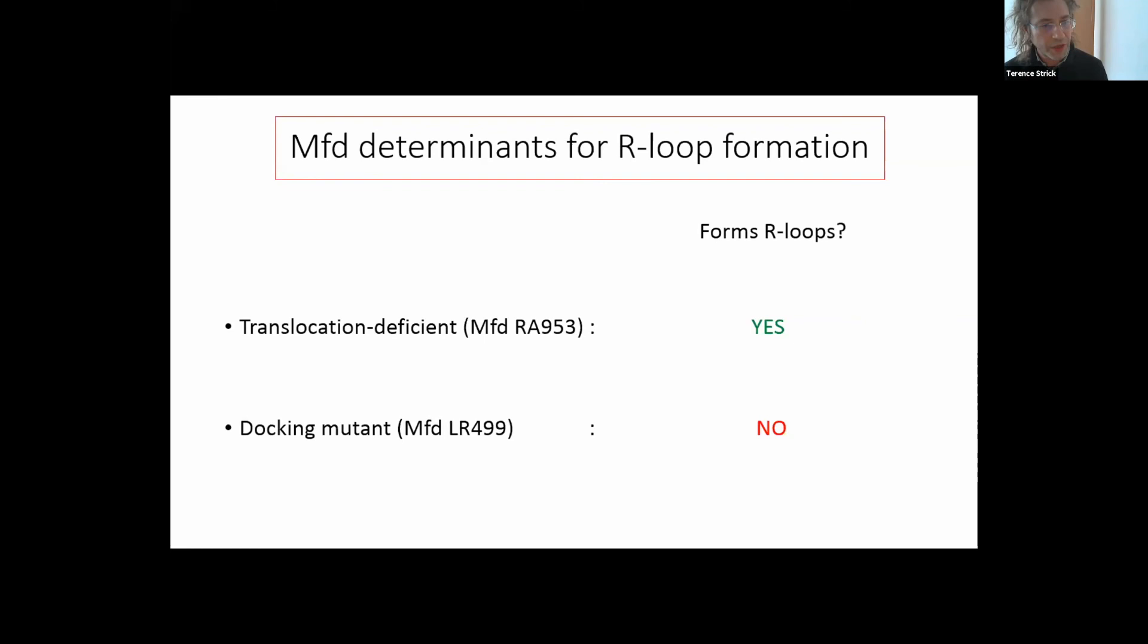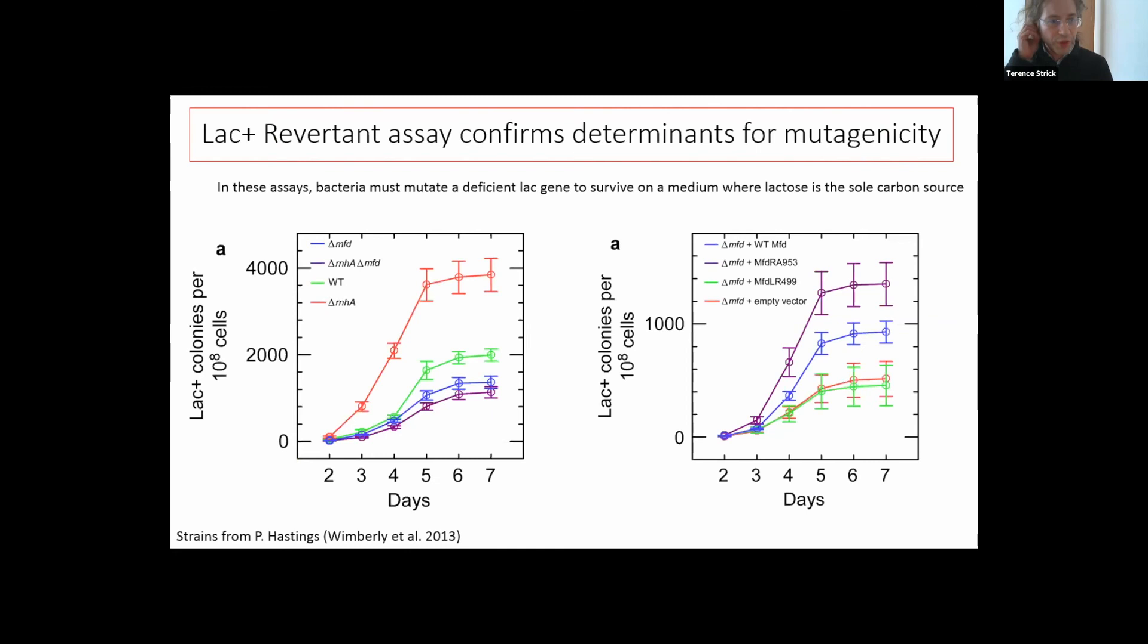Again, MFD does not need to translocate. In fact, we can change the rate at which this domain forms by playing with the relative velocity of MFD and RNAP by changing nucleotide concentration. However, docking to polymerase is essential. If you have a docking mutant, it will never be able to form this triple domain. It will not be able to form a closed topological system and generate these negative supercoils.